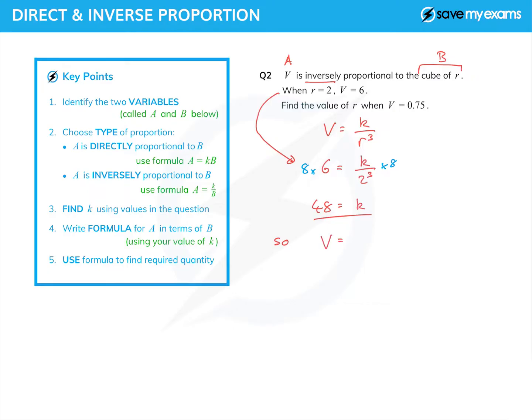This gives me a formula of v equals 48 over r cubed. We're asked to find the value of r this time, not the value of v, but the value of r when v equals 0.75. So I put that in and I get 0.75 equals 48 over r cubed.